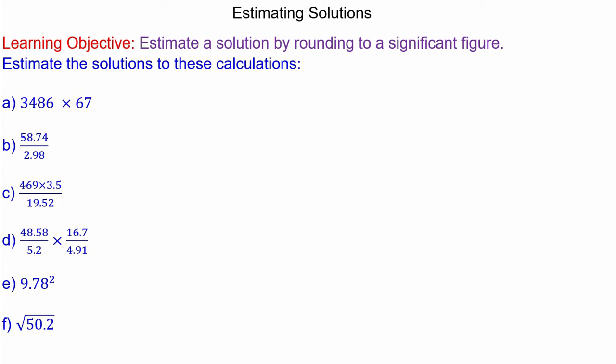For question A, we're going to round 3486 to one significant figure, so this becomes 3000. And we're going to multiply that by 67 to one significant figure, which becomes 70. So this estimate: 3 times 7 is 21, and with 4 zeros, 210,000.